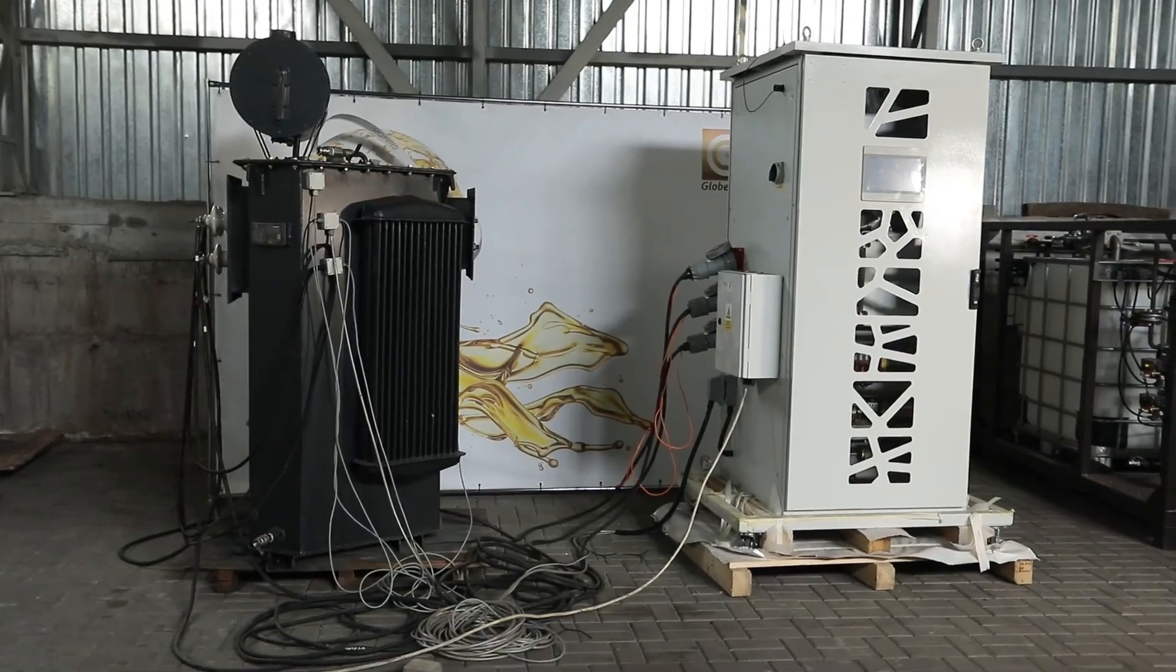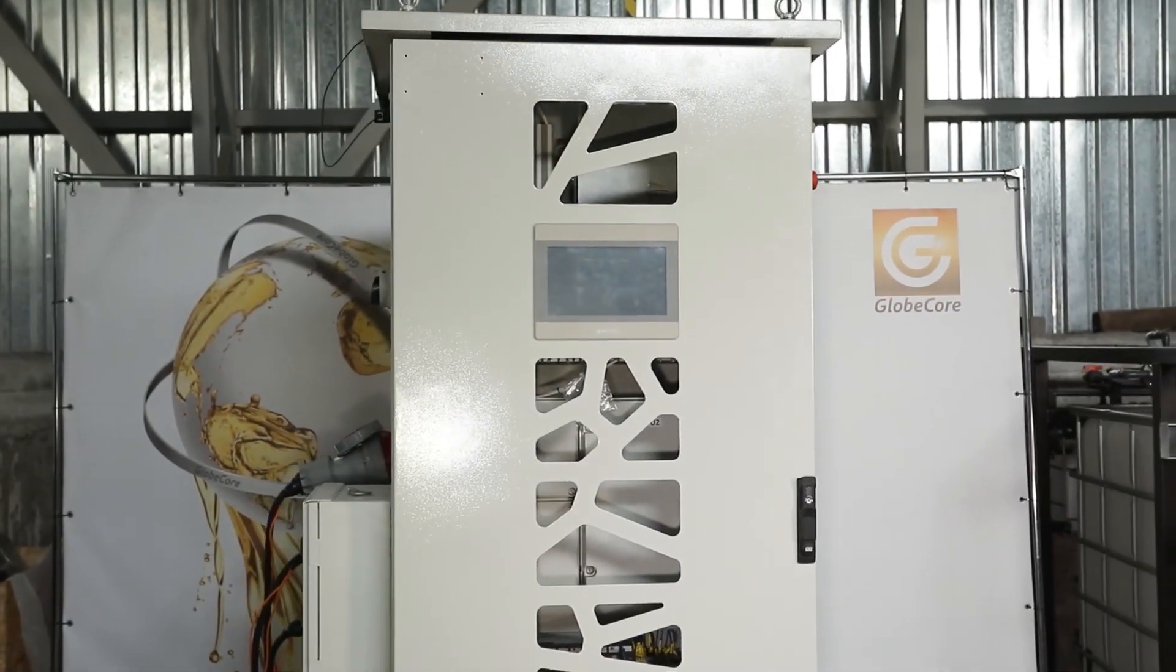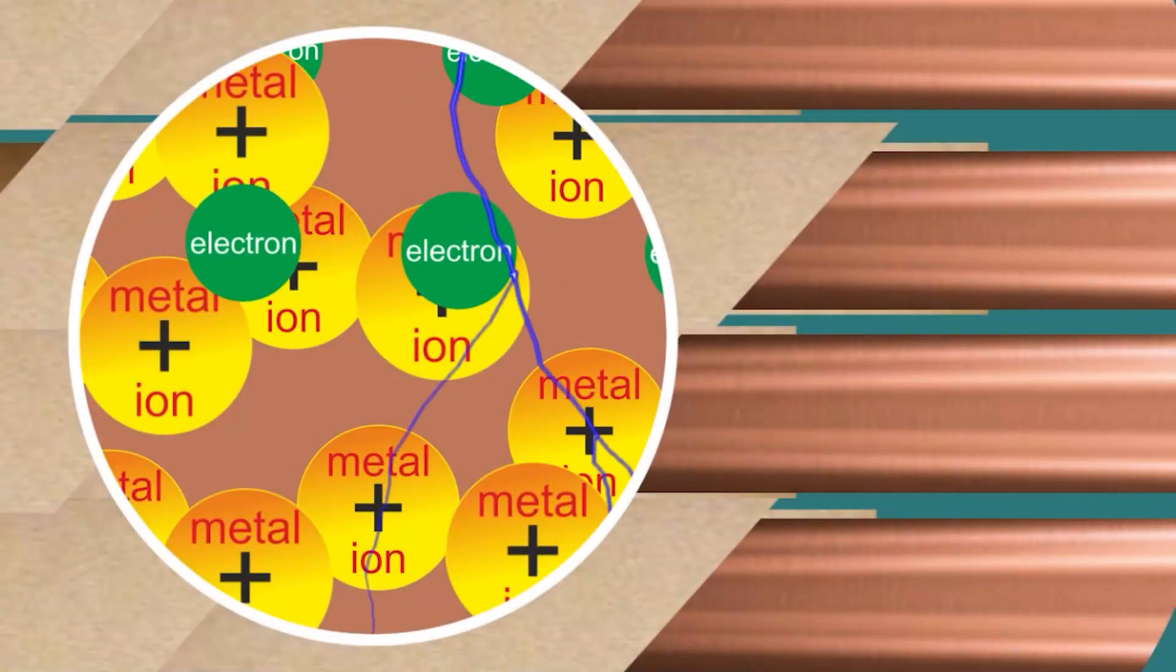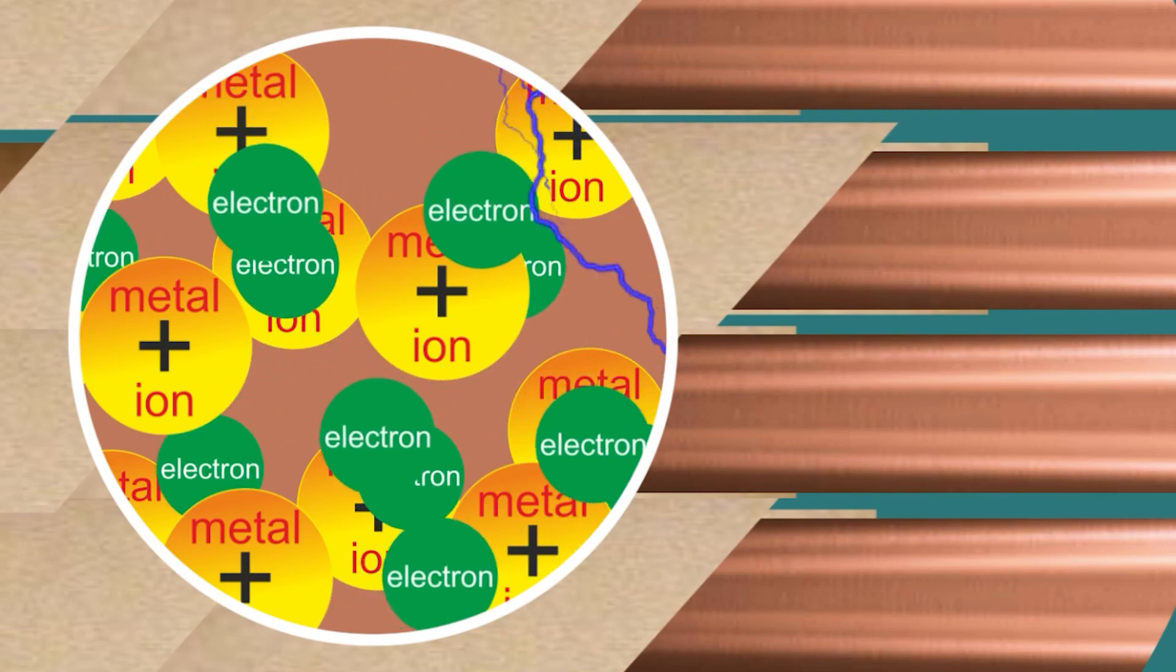When an alternating current passes through a conductor, electrons that move in an orderly manner and at a certain speed collide with the atoms of the substance from which the conductor is made. In this case, part of the energy of the electrons is converted into heat and the conductor heats up.